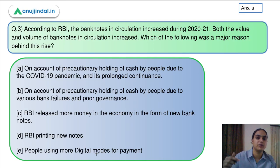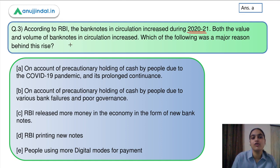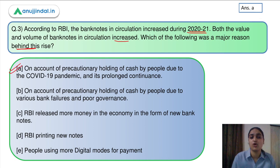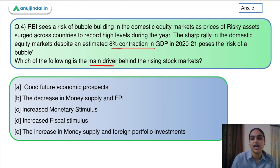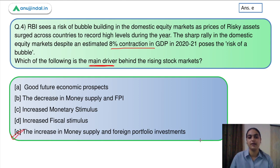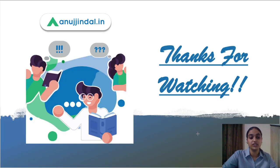Question 2 asks which statement is incorrect about bank frauds — the answer is option E, which incorrectly says the share of private sector banks decreased; it has actually increased. Question 3 asks the major reason behind the increase in bank notes in circulation — the answer is option A, precautionary cash hoarding due to the pandemic. Question 4 asks the main driver behind the rising stock market — the answer is the increase in money supply and FPIs. That's all for today's session. Thank you so much.